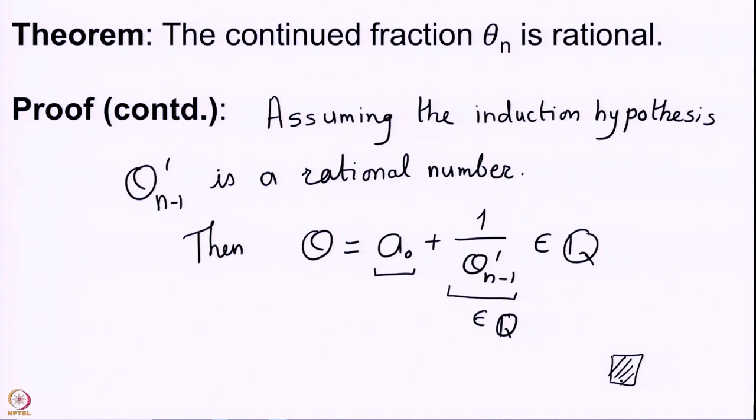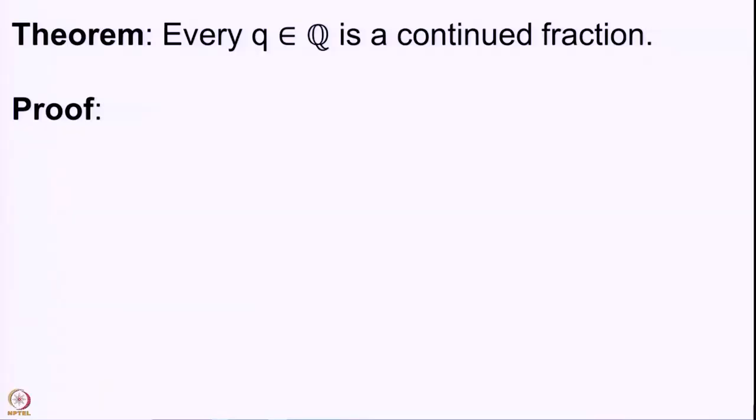Every continued fraction is a rational number. Is the other way also true? Yes — every rational number can be written as a continued fraction. A continued fraction is essentially given by the sequence a_0, a_1, ..., a_n, where a_0 is an integer and a_1, a_2, ..., a_n are natural numbers. We want to write a rational number Q in this form.